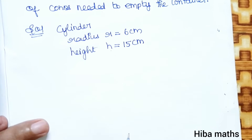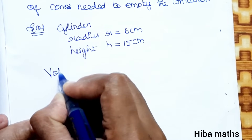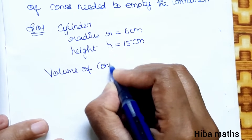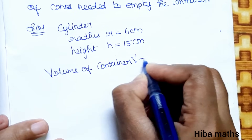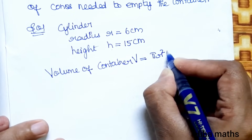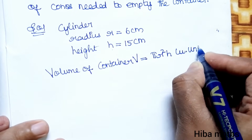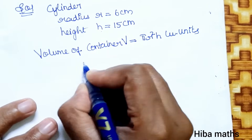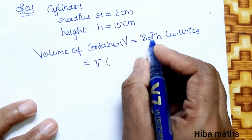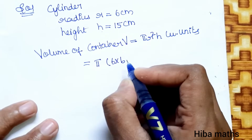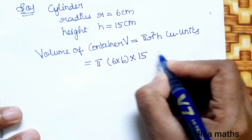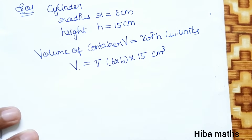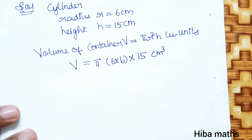Height = 15 centimeter. Volume of container V = πr²h cubic units. r² = 6 × 6, height = 15 centimeter cube.